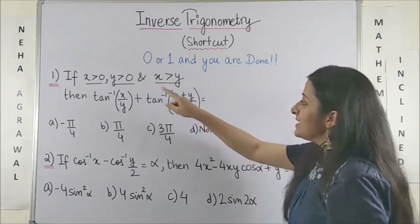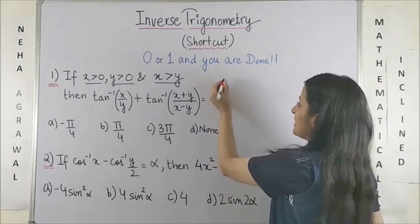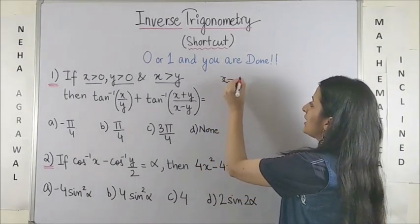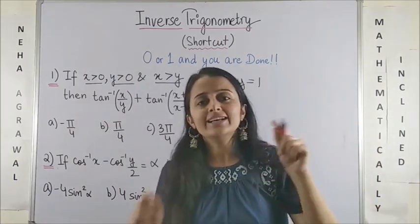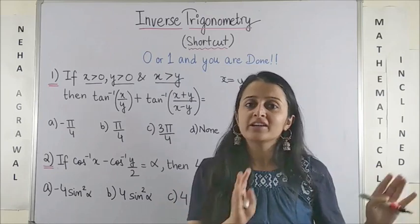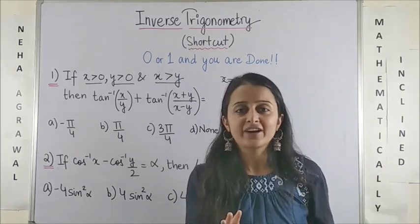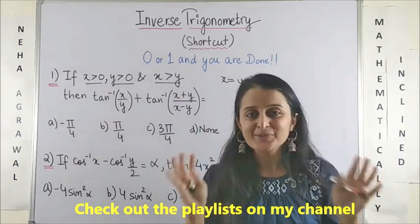So here, since it already says x and y have to be greater than 0, let's try taking x and y to be equal to 1. Now, the only concern when you take any of these is that none of the expressions should become undefined. Basically, it should end up giving you some value.